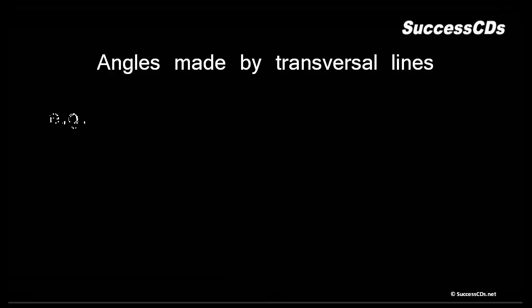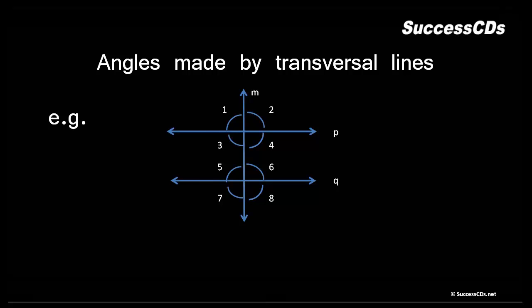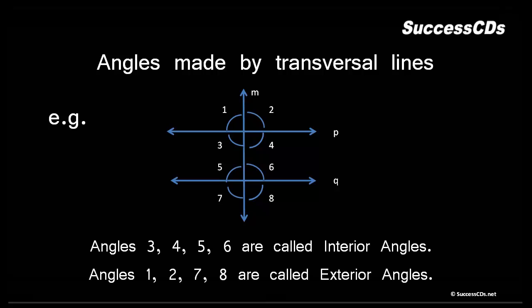Now let's take a look at angles made by transversal lines. First of all we have interior and exterior angles. Interior angles are those angles which are made between the two lines. If you take a look between lines P and Q, there are angles 3, 4, 5, and 6 — these four angles are known as interior angles.